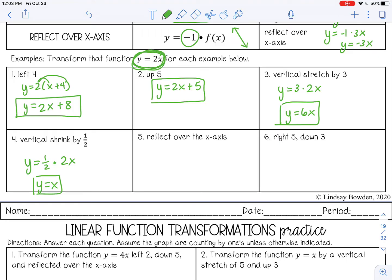Reflect over the x-axis. That means you're going to multiply by negative one out front. So negative 2x. Just going to make the line fall from left to right.